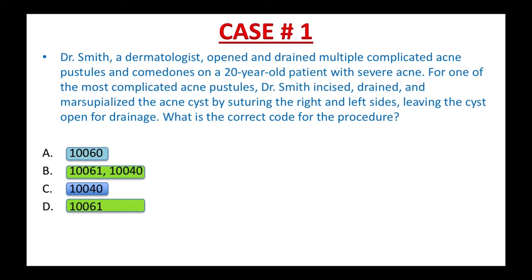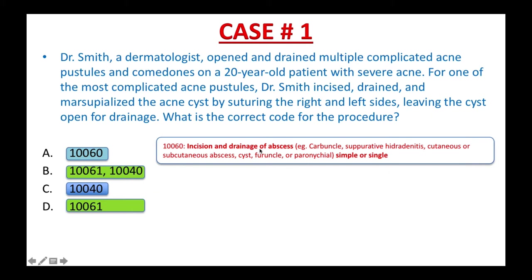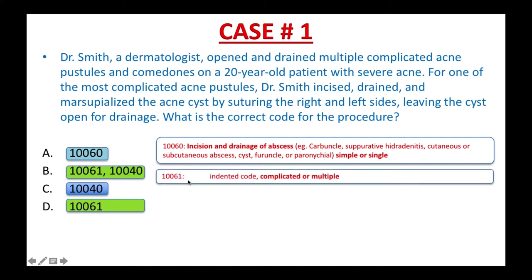Assuming that you already looked them up in your CPT book, here's what you find. 10060: incision and drainage of abscess, carbuncle, suppurative hidradenitis, cutaneous or subcutaneous abscess, cyst, furuncle, or paronychia — simple or single. Second, 10061: this is the indented code. If you watched my video lesson about CPT format and structure, you would remember that indented codes exist for the purpose of saving space. Rather than retyping all the same information that applies in the parent code, they indent this code. So you have to understand that 10061 includes all the information from the parent code above, except it is complicated and multiple.